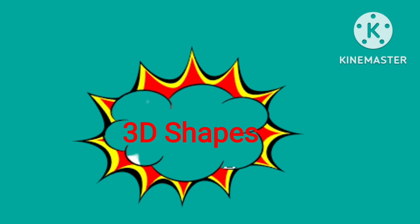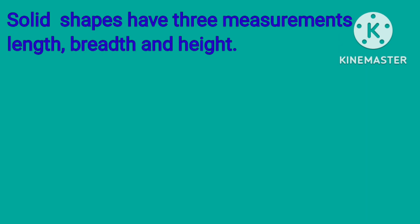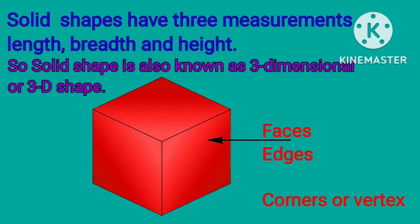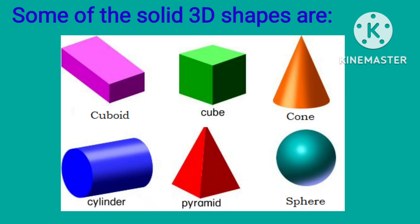3D shapes, or solid shapes, have three measurements: length, breadth, and height. Solid shapes are also known as three-dimensional or 3D shapes. Solid shapes have faces, edges, corners, or vertices. Some of the solid 3D shapes are cuboid, cube, cone, cylinder, pyramid, and sphere.